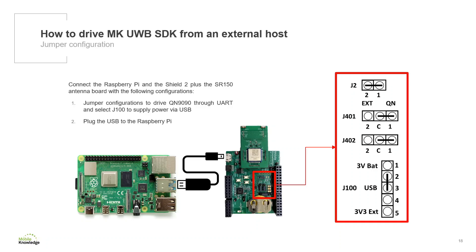To run the distance alert, we will need the MKShield 2 with an SR150 antenna board. The jumper configurations for the MKShield 2 are as follows: J2 needs to be set to power the QN9090 on. The J401 jumper needs to be set in position 1C, because it selects the ultra-wideband module to be enabled by the QN9090. The J4002 jumper needs to be set in position 1C as well to communicate with the ultra-wideband module — that is, the ultra-wideband signals will be routed to the QN9090. Finally, J100 will be set to position 2-3 to drive power from the USB.